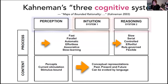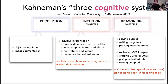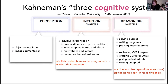What's more interesting to me is the content: both the intuition-level reasoning and the reasoning-level reasoning involve conceptual representations. It involves thinking about past, present, and future, and it can be invoked by language — it does involve language. More concretely, object recognition and image segmentation correspond more to perception, whereas solving puzzles, writing programs, proving logic theorems — including reviewing CVPR papers and crafting CVPR rebuttals — seem clearly System 2. In between, we have intuition or System 1 tasks, which is about reasoning about preconditions and post-conditions. This is what humans do every minute of their waking moments, and we have not really solved that part.